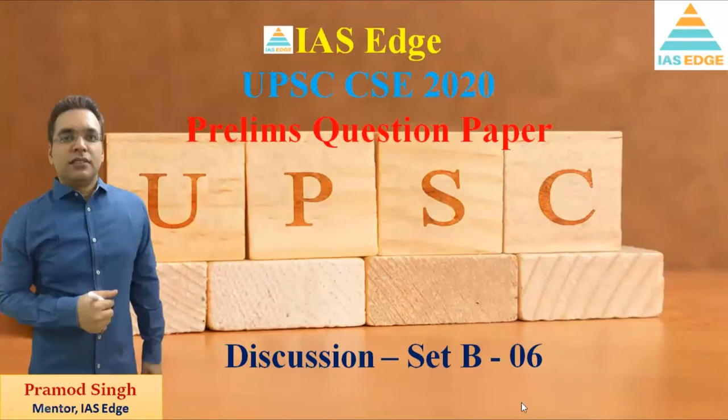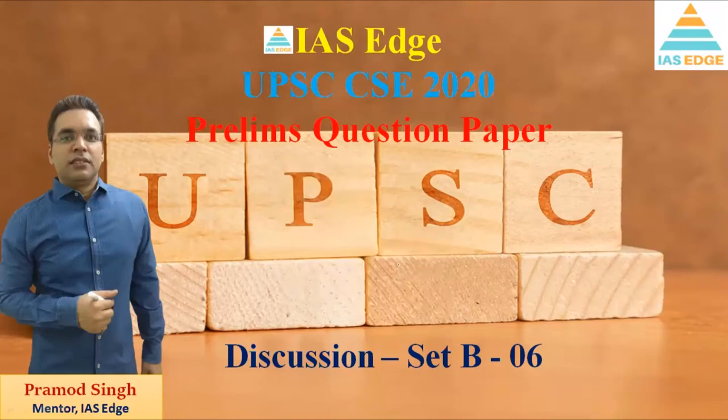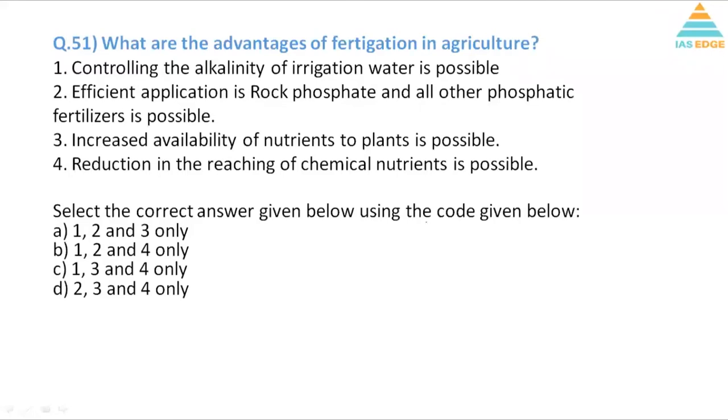Hello everybody, this is the discussion for Set C of the prelims question paper. So far we have discussed five sets, that is questions 1 to 50. In every set we're discussing 10 questions, so from question 51 to 60, let's discuss and understand them. What are the advantages of fertigation in irrigation? Fertigation means fertilization - the use of fertilizer plus irrigation.